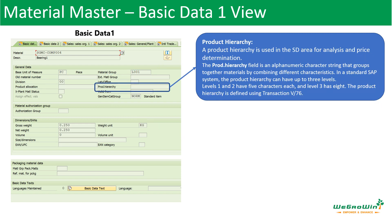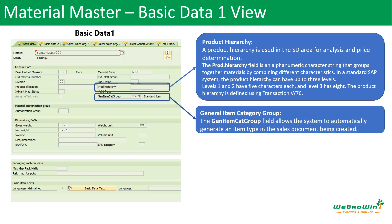Then we have product hierarchy, which is used in the SD area for analysis and price determination. It is an alphanumeric character field where level 1 and level 2 have 5 characteristics and level 3 has 8 characteristics. This is defined using transaction V/76 and is defined by the sales and distribution team. Next, we have the general item category group, which allows the system to automatically generate an item type in the sales document when it is created.